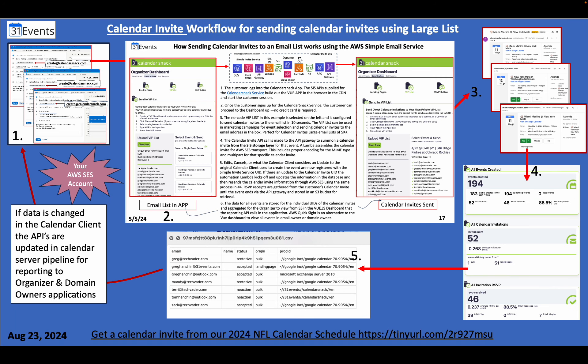This is the workflow for the large list. The large list follows the same modality or interface journey. Data is sent to a box of calendar invites. In this organizer schedule example for the NFL schedule, the organizer sent 300 events to create at calendarsnack.com for the football schedules. Those schedules auto-magically showed up in S3 and SES, and then we disassembled those calendar invites and got them staged to be sent.